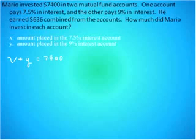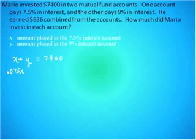The second thing they tell us is that he earned $636. We know that 7.5% times the amount in that account plus 9% times the amount in the 9% account equals $636. So the second equation is 0.075x plus 0.09y equal to 636.